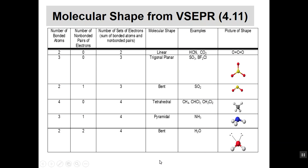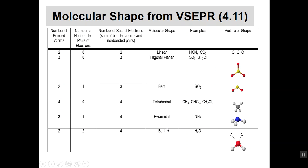Lone pairs of electrons are important in helping us determine geometry. In CO2, the oxygen-carbon-oxygen atoms are all in a straight line because there are no lone pairs on the carbon. In SO2, there are three atoms but a lone pair on the central atom, so the shape is bent — bent in a triangular type of shape. The shape of the molecule comes directly from what those lone pairs are doing around the central atom.